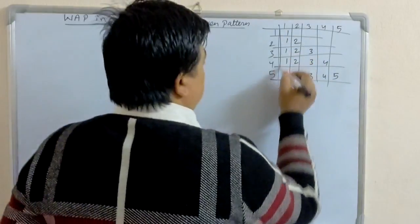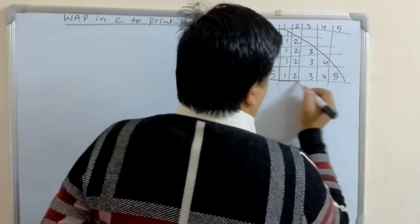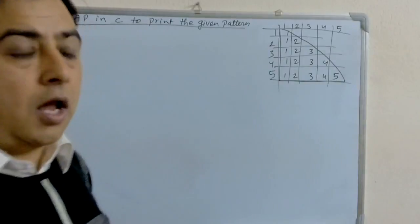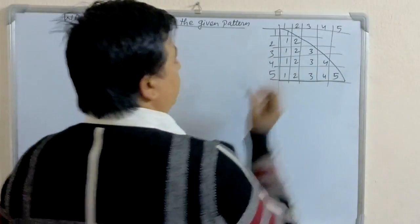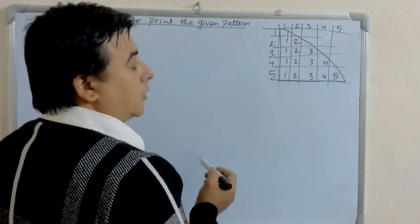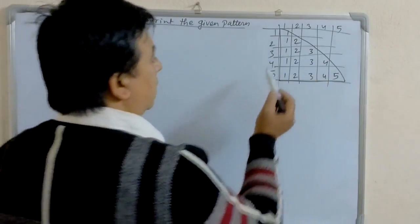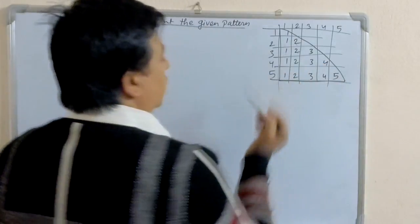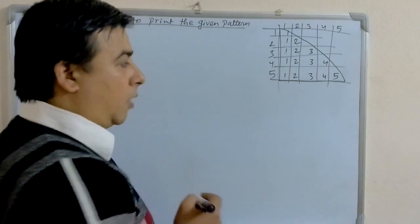The format is the same as the previous video — in the form of a right angle triangle. In the first row, we have to print only 1. In the second row, 1 and 2. In the third row, 1, 2, and 3. So the printing is equal to the number of rows.